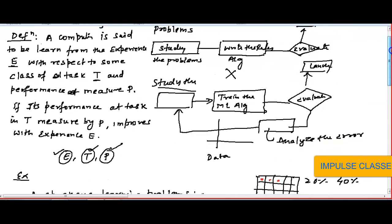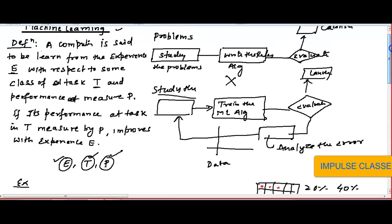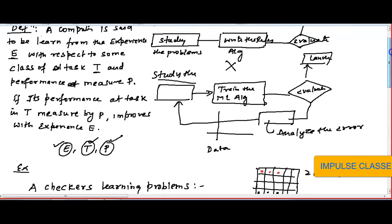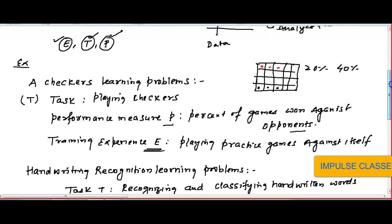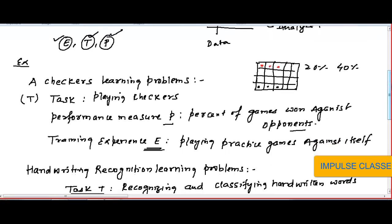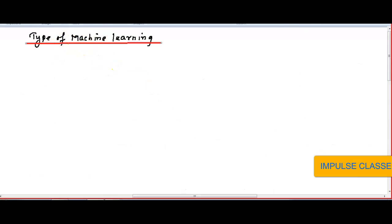So if any problem is given, we have to specify it in three parts: E, T, and P. E is experience, T is task, and P is performance. By giving the experience for the particular task, if your performance is increasing, then we can say the machine is learning. There are several types of machine learning.